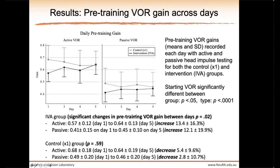Here are some of the results. We look at active and passive pre-training VOR gains on each day, representing retention of VOR function from the previous session. The IVA group (black lines) showed significant increases in VOR gain over four days: 13% for active VOR and 12% for passive VOR. This significant finding has not been demonstrated before — we can increase vestibular function and retain it. The control group trended toward a reduction in VOR gain of around 3–5%, though this was not statistically significant.